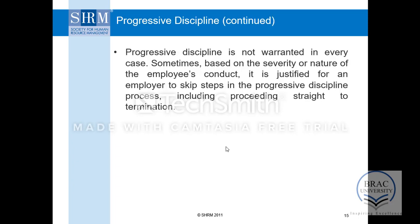Progressive discipline is not always applied in every situation — it depends on the circumstances. If required, the organization might go straight to a higher level of disciplinary action like termination, depending on the type of offense. For example, if the employee has committed a criminal offense such as theft or murder, the organization will directly go for termination.